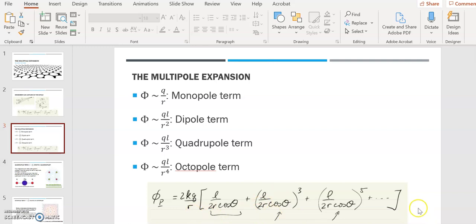So if you look at our expansion that we did for two charges, plus and minus Q separated by L, you can see that we have a dipole term. We don't have a monopole term, but we do have a dipole term. And then we would also have a term that's proportional to 1 over R to the fourth, and so we would have an octopole term in our multipole expansion of this potential.